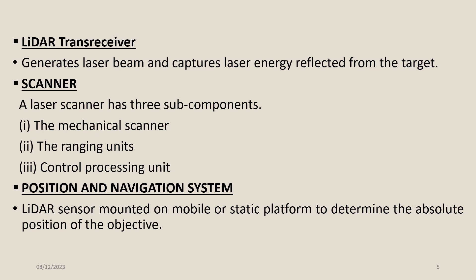Further components include the LIDAR transreceiver, which generates the laser beam and captures laser energy reflected from the target, and the Scanner, which has three sub-components: the mechanical scanner, the ranging unit, and the controlled processing unit. The Position and Navigation System allows the LIDAR sensor, mounted on a mobile or static platform, to determine the absolute position of the objective.